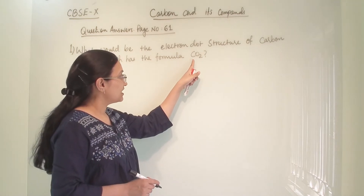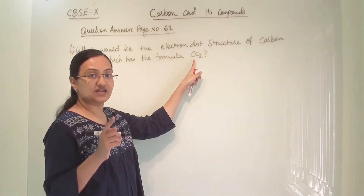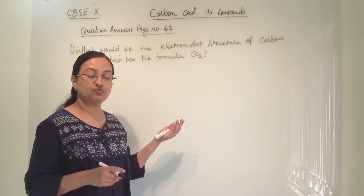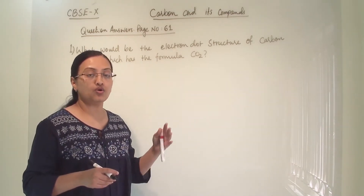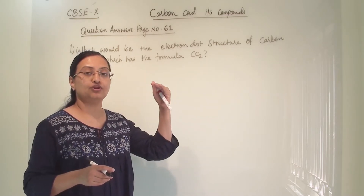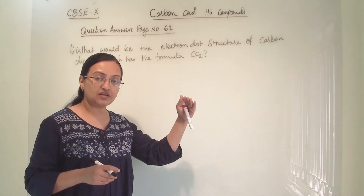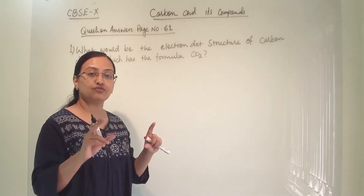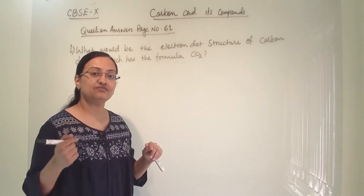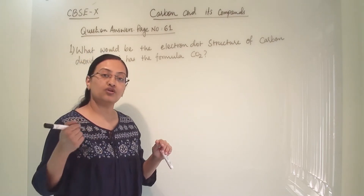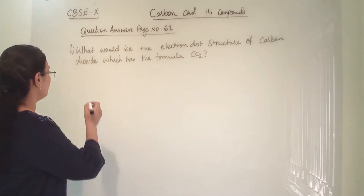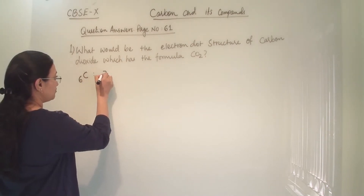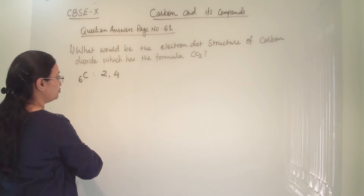Here, one atom of carbon is attached with two atoms of oxygen. Whenever we are answering a question about bonding, whether it is a covalent bond or ionic bond, first we will write the atomic number, then the electronic configuration, explain how many electrons they are lacking, and then show the sharing or transfer of electrons. So here, first we will write carbon — its atomic number is 6.